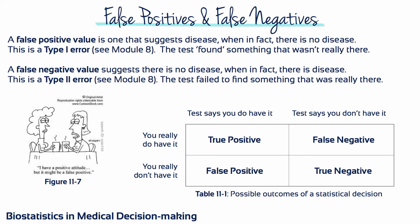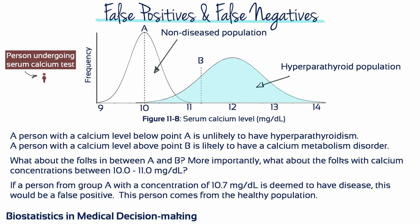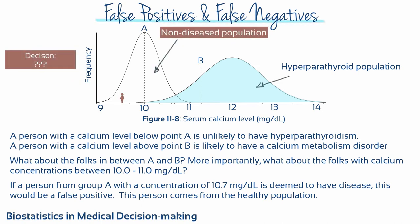Decreasing false positives means increasing false negatives. This conundrum requires medical decision-making. The physician has to decide when false positives are acceptable, since patients with positive test results will have to undergo further testing. Importantly, the physician also has to decide whether a false negative would be dangerous — failing to find some diseases when they are really present could be dangerous.